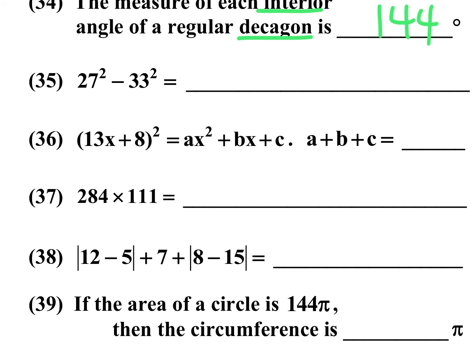Number 35, 27 squared minus 33 squared. That's difference of squares. So here you do, you're going to get a negative, and you're going to take 27 minus 33 is negative 6, and 27 plus 33 is 60. So 6 times 60 is 360.